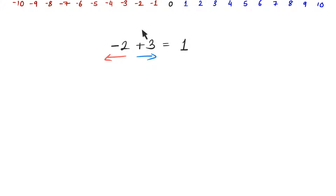We can visualise this on the number line. The negative 2 is moving us 2 steps to the left — so from 0, it moves 1, 2 to the left. But the positive 3 is pulling us back 3 steps to the right — so from negative 2, we move 1, 2, 3. And as you can see, we clearly arrive at 1. So my answer is 1.